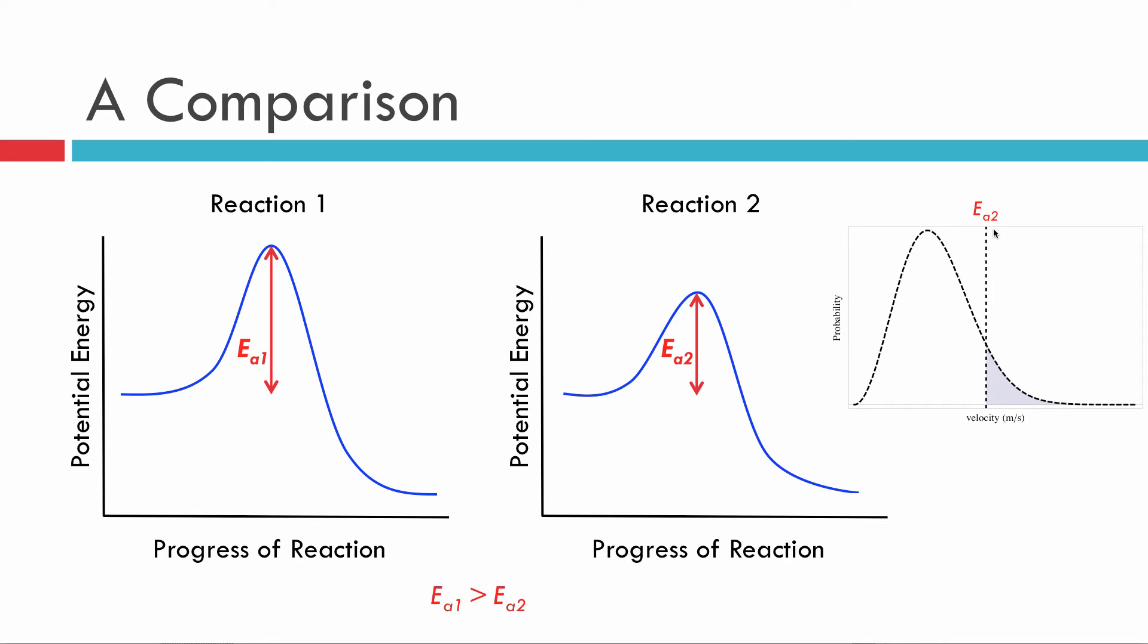Now the question is, where would Ea1 stack up here? It's a larger barrier, it's a larger energy, so our molecules would have to collide with more energy. And more energy means a higher velocity, so we'd expect Ea1 to have a dotted line over to the right.